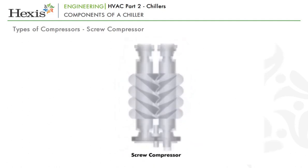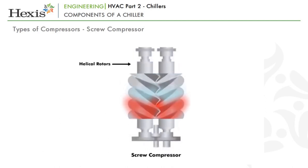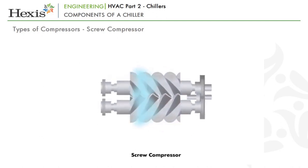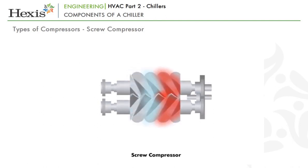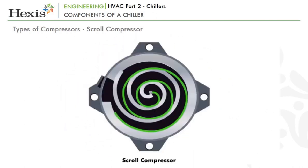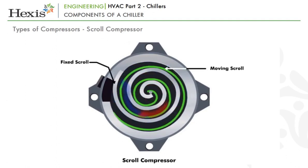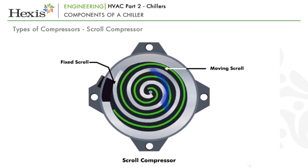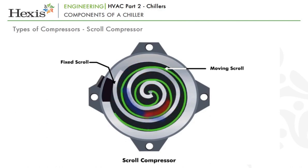Screw compressors use two helical rotors which mesh together to trap and compress the gas as it moves forward towards the outlet in a cylinder, with the available space getting increasingly smaller. They have increased reliability due to fewer moving parts and higher efficiency. The last type is the scroll compressor, which comprises two scrolls — one fixed and the other moving. As the moving scroll moves, pockets of gas are slowly moved towards the center, gradually reducing in volume, thereby compressing the gas.